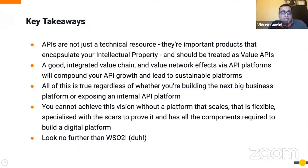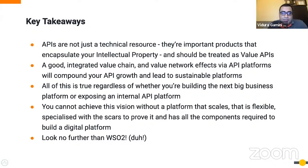To have a marketplace like that, you need a platform that gives you these capabilities — an API-centric architecture of your choice, be it layered, centralized, or decentralized, that aligns with your business models and has the ability to scale. You need a platform that is full-featured, flexible for on-premise, cloud, or hybrid deployment, with all the platform components to complete the API supply chain for your digital products — not only API management components, but also integration and identity and access management. This is the WSO2 platform. Key takeaways: APIs are not just technical resources — they are important products that encapsulate your intellectual property. A good integrated value chain and value network will compound your API growth and lead to sustainable platforms, regardless of whether you're building the next big business or using APIs internally. For all of this, look no further than WSO2.